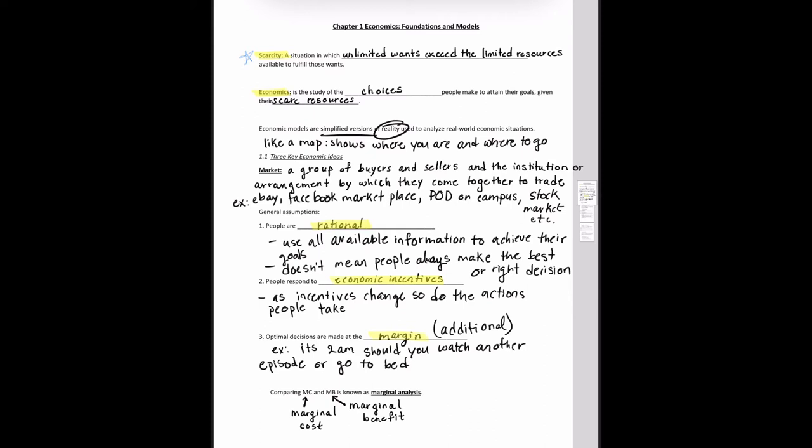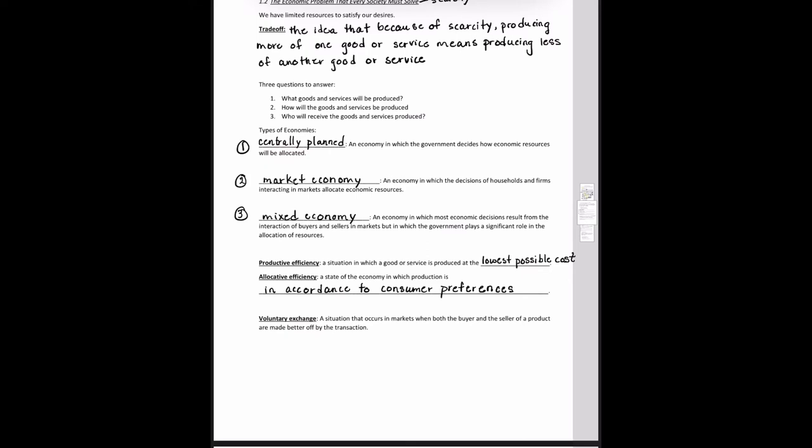Let's move on to the next section. What's the economic problem that every society must solve? Your answer is scarcity, right? We have limited resources to satisfy our desires. Because of this, we face trade-offs. What's a trade-off? It's the idea that because of scarcity, producing more of one good or service means producing less of another good or service, right? In order to gain more hours of sleep, what do we have to do? We have to watch less Netflix or Hulu or Disney Plus or insert your favorite streaming service there, right? There's a trade-off.